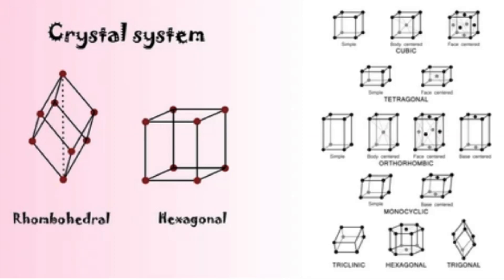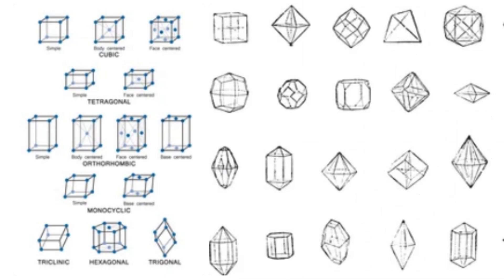Hexagonal system. This system features four axes, three in the same plane, equidistant from each other at 120 degrees, and a fourth axis perpendicular to the plane of the other three. Hexagonal symmetry often results in hexagonal prisms or pyramids. Quartz and calcite are prominent examples within this system.